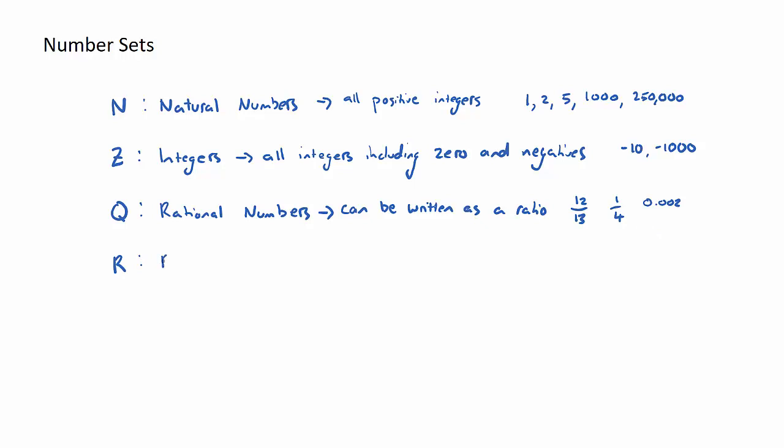Now, finally, R stands for real numbers, as opposed to unreal numbers. And real numbers are any number between negative infinity and infinity. Now, in the IB Math Studies syllabus, you won't encounter any numbers that aren't real numbers.